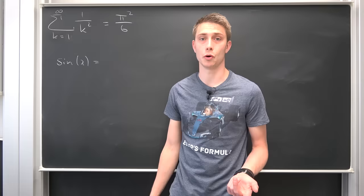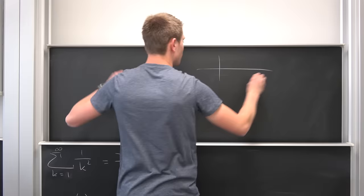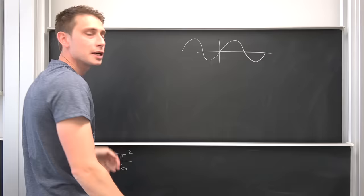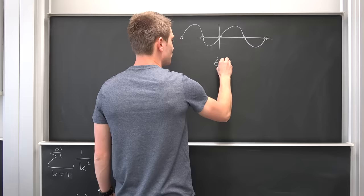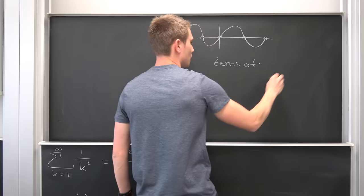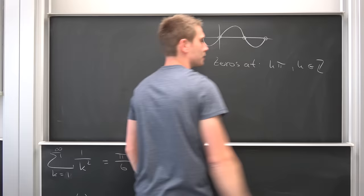So if you take a look at the graph of the sine function, you might notice something curious. The sine function looks something like this right here. You see we have a zero at zero, we have a zero at pi, we have a zero at 2π. Also we have a zero at negative π, negative 2π, and so on. Overall, we have zeros at every k times π, where k is an element of the integers — positive and negative.